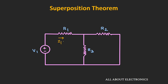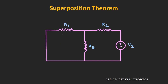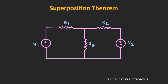Similarly, in the second case, we consider voltage source V2 alone and turn off voltage source V1, replacing it by a short circuit. In this scenario, we again find the current flowing through resistor R1 — let's call it I2. The total current flowing through resistor R1 will then be nothing but the algebraic sum of I1 and I2.